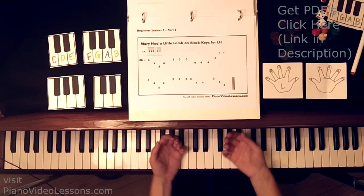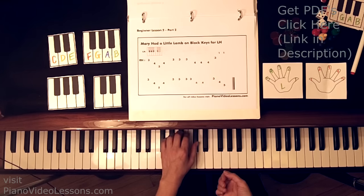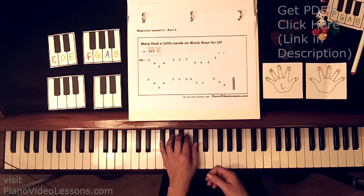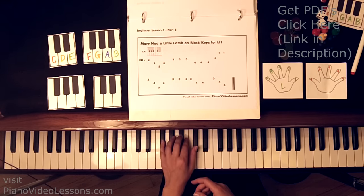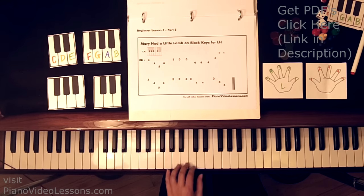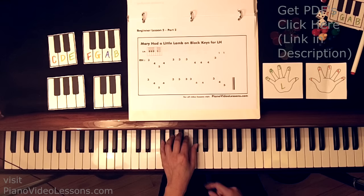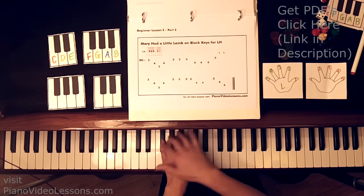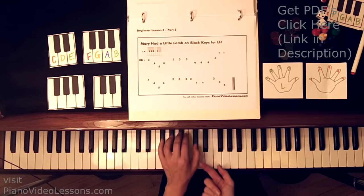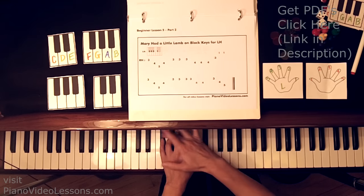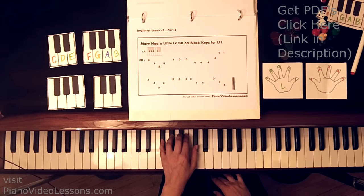But again, let's find nice relaxed hands, turn them over onto the keys, 3, 4, 5 and 1. You shouldn't feel like your thumb is awkward. You just slide your whole hand on the black keys until you find a good spot where everybody can balance without falling off.